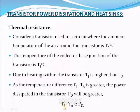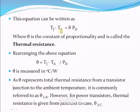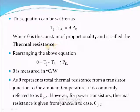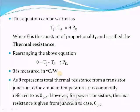The junction temperature minus ambient temperature is directly proportional to the dissipated power. To eliminate the proportionality, we use one constant called theta (θ), which is also called thermal resistance. Rearranging the equation: θ = (Tj - Ta) / Pd. The units for thermal resistance are degree centigrade per watt — numerator is temperature in °C and denominator is power in watts.